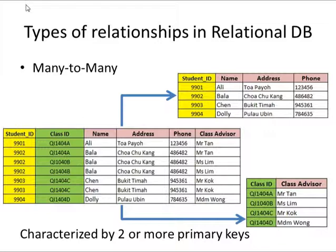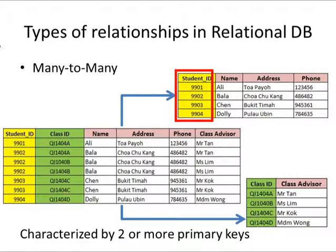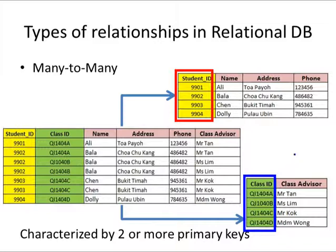The third kind is known as the many-to-many relational database. In this type, the central database table is actually split into two smaller tables — one on the top and one on the bottom. The top table is sorted according to the student ID key and contains information on name, address, and phone numbers. The bottom table is sorted according to the class ID and contains information regarding the class advisor for the students. This type of relational database is characterized by two or more primary keys.